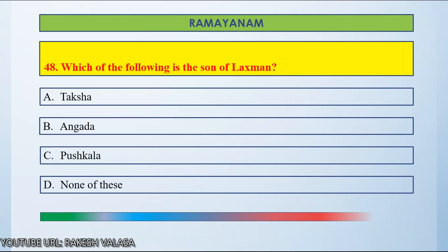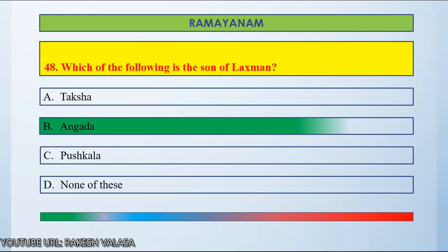If you know the answer, please post in the comment section. Time up. The answer is Angada. Lakshman had 2 sons — one is Angada, another one is Chandraketu. Answer is Option B, Angada.